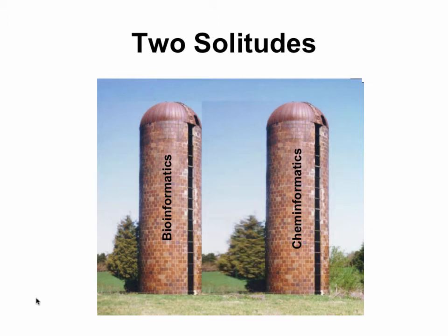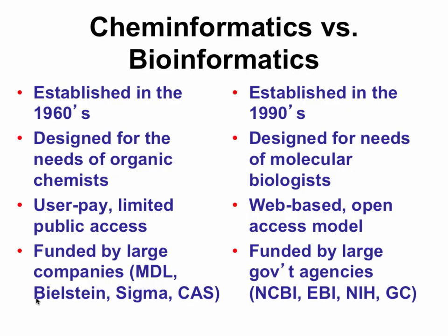Historically, there have been two solitudes: cheminformatics and bioinformatics. Cheminformatics has been around since the 1960s, developed largely for the pharmaceutical industry and for medicinal and organic chemists. In the 1960s, computers and software were very expensive, and the American Chemical Society and others used that model for many years. As a result, most chemical information is not free — it's very expensive and very limited to the public, supporting large companies like Beilstein, Sigma, MDL, and CAS.